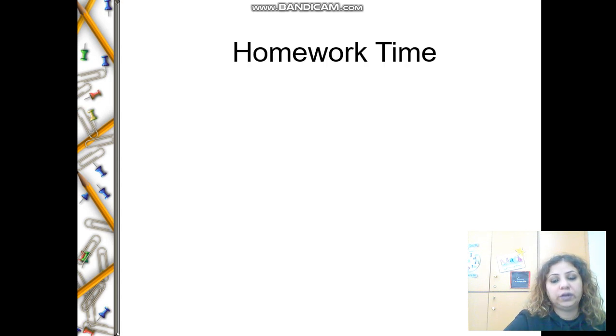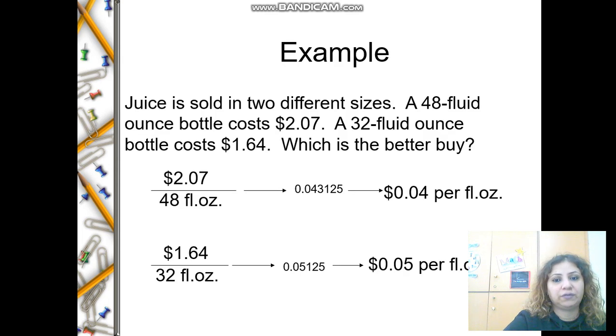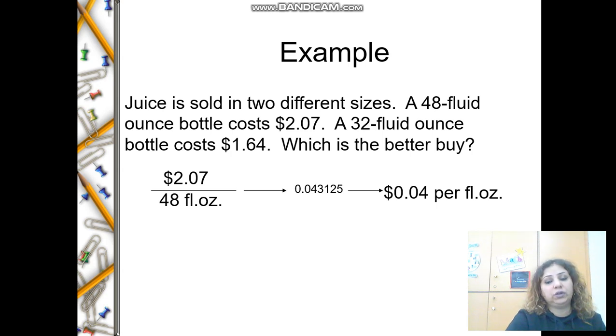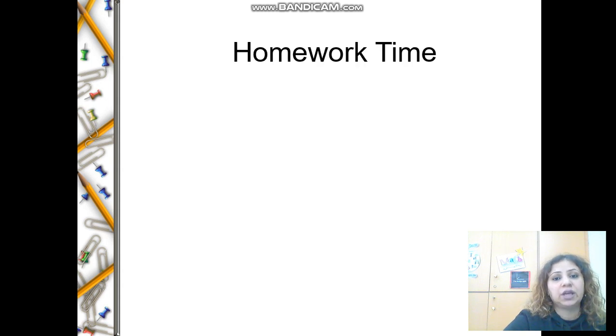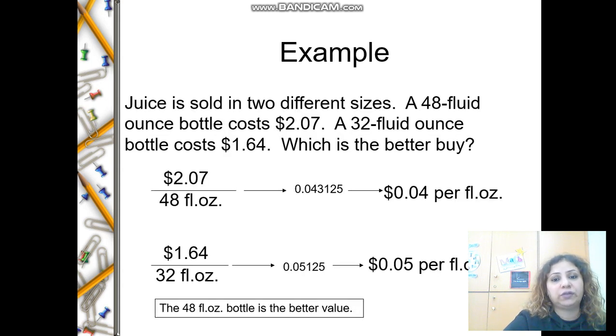Now it's homework time. Please refer to the examples that you have in these slides. Try to copy them and start solving them on your own, then check your answers. When you compare two different rates, you need to get the unit rate for each one by dividing the numerator by the denominator. This way you can compare which price is less or more. Thank you and see you in the next video.